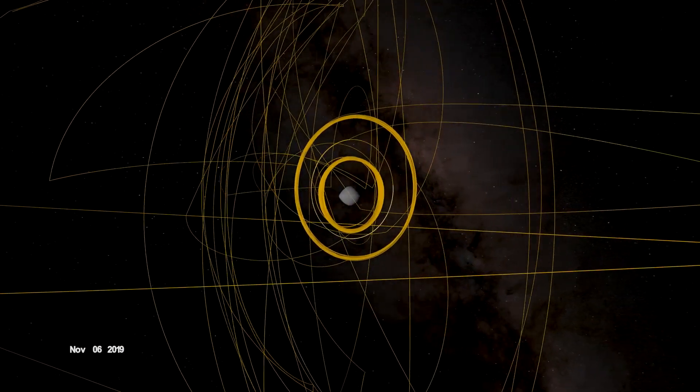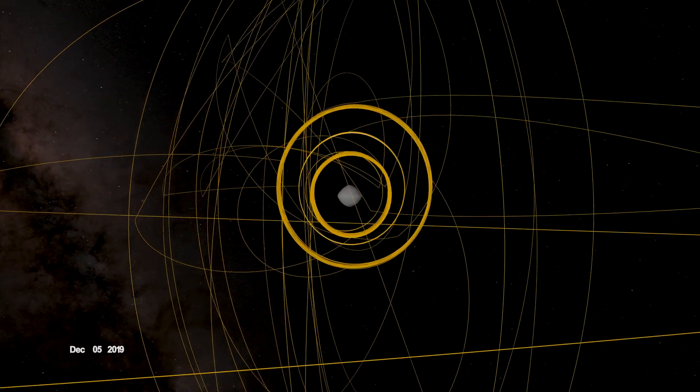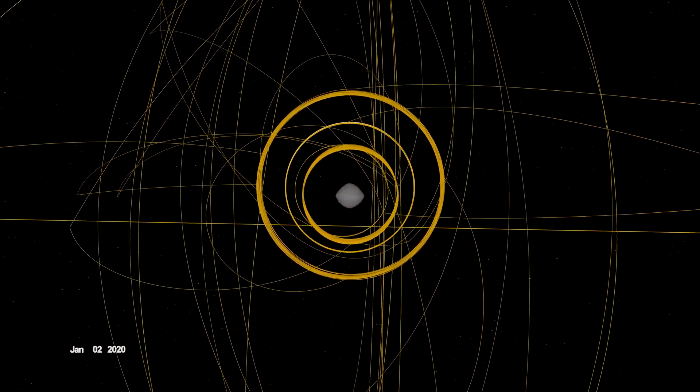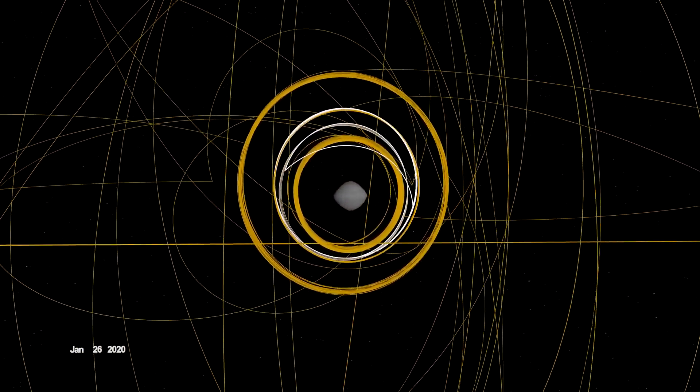OSIRIS-REx concluded its first year at Bennu back in orbit, circling the asteroid's terminator, or boundary between day and night. Here, outside forces acting on the spacecraft are balanced, allowing it to orbit within the same plane over time.